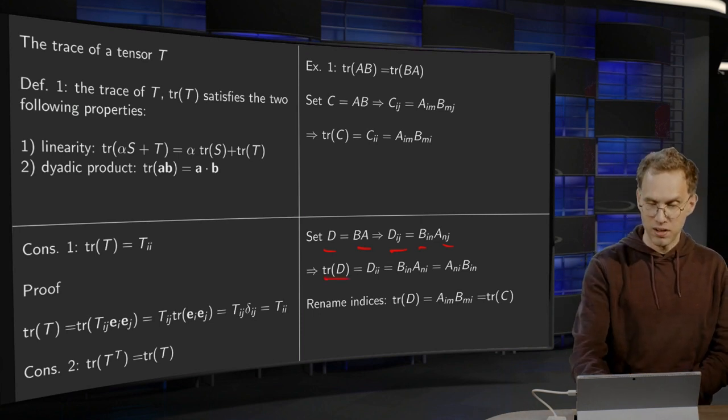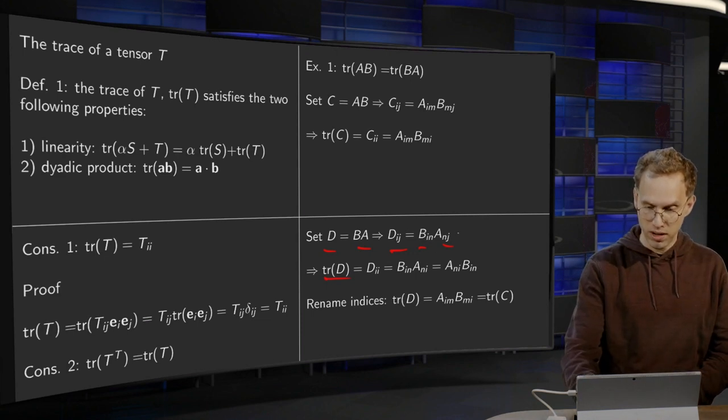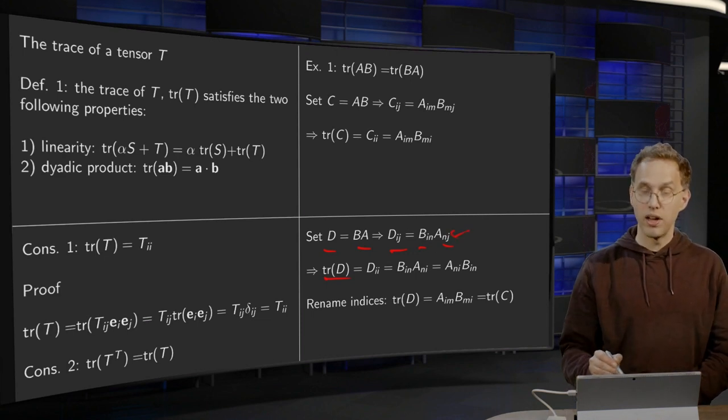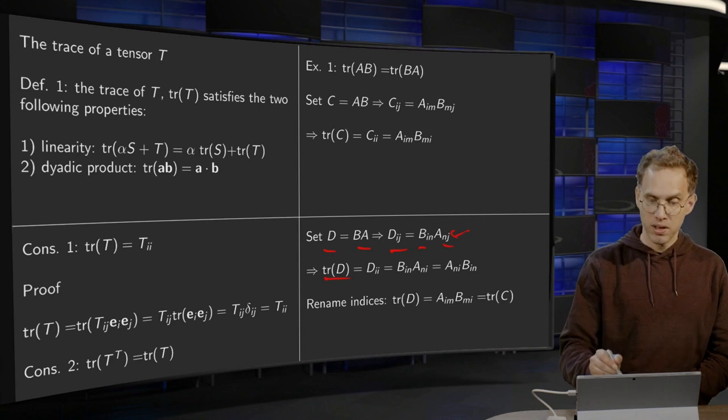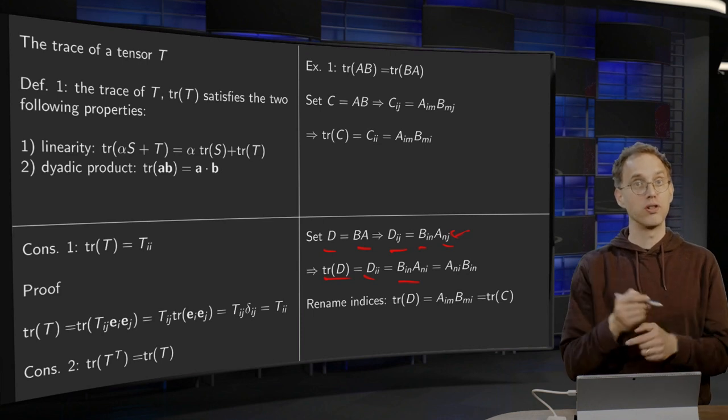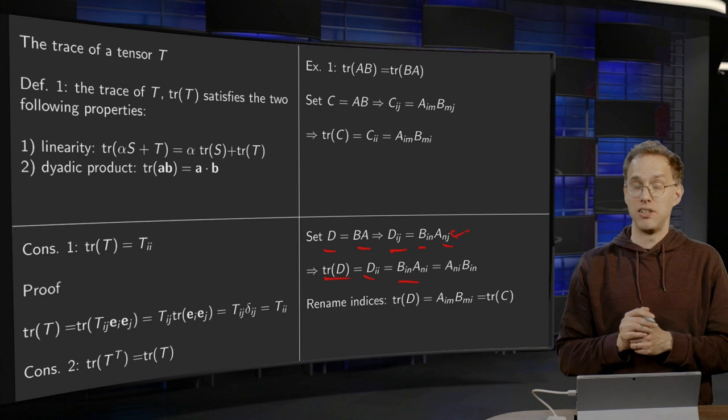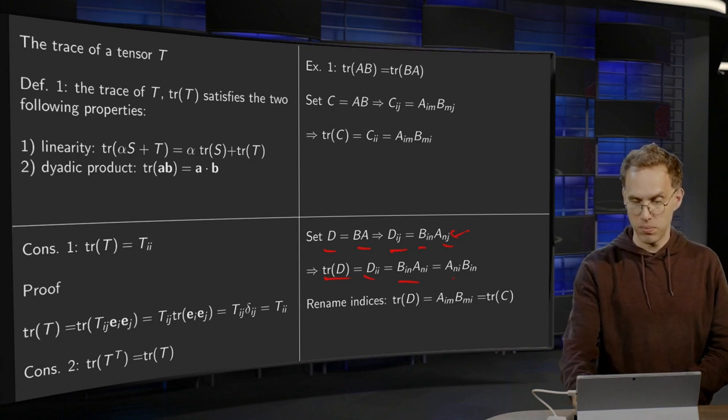So for the trace of D, we again have to set j equal to i, so that's what we do over here, setting j equal to i. You get Dii equals BinAni. And of course we can invert the order now, because Bin and Ani, now they are just numbers. So we can put them the other way around.